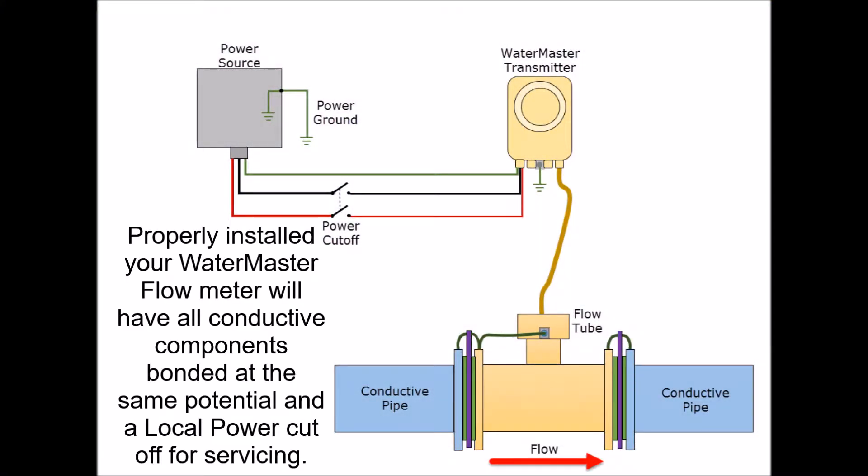Properly installed, your WaterMaster Flow Meter will have a local power cut off for servicing, bonding of the transmitter housing to earth, power source bonded to earth, sensor head bonded to one flange, both flanges bonded to their respective ground rings or plates, and if the pipes are conductive, flanges bonded to flanges. It should be noted that you must not ground cathodic protected systems. Also, all WaterMasters require at least one ground ring upstream.